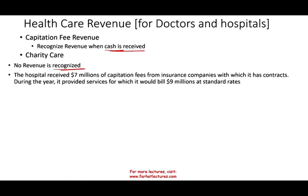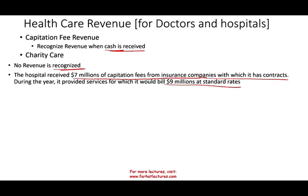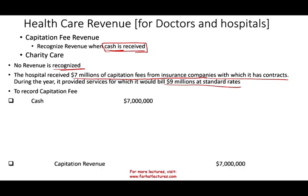Example: the hospital received $7 million of capitation fees from an insurance company under contract. During the year, it provided services for which it would have billed $9 million at standard rates. Do we report $9 million or $7 million? For capitation coverage, we record when cash is received. Therefore: debit cash $7 million, credit capitation revenue $7 million. We don't worry about the $9 million standard rate — that's irrelevant under capitation.